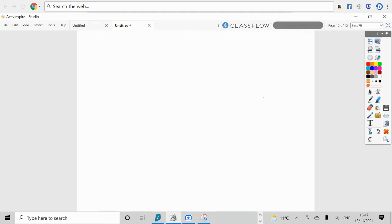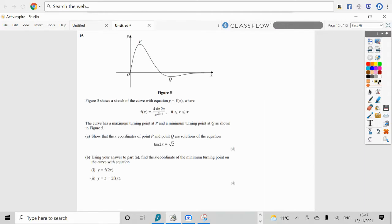Okay. Part B. Using your answer to part A find the x coordinate of the minimum turning point on the curve with the equation part 1 equals f of 2x. Now, you've got to remember what happens when it's inside the bracket, it's a factor of a half don't forget.